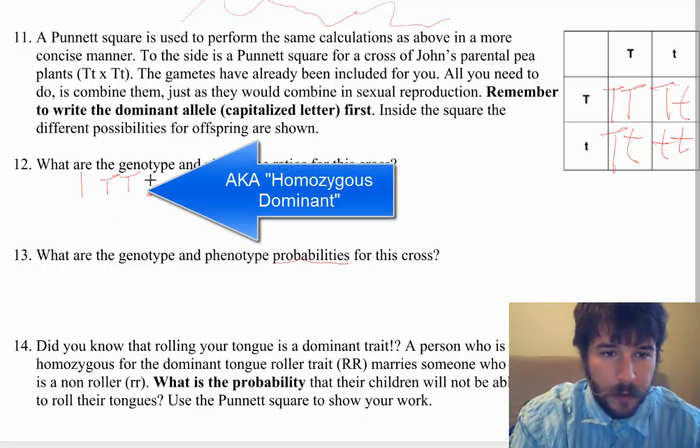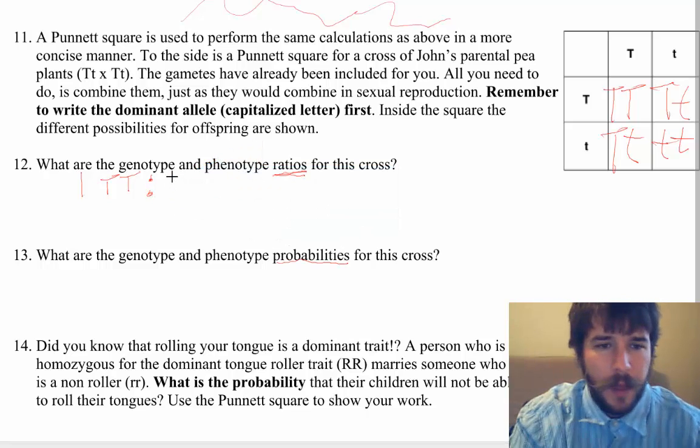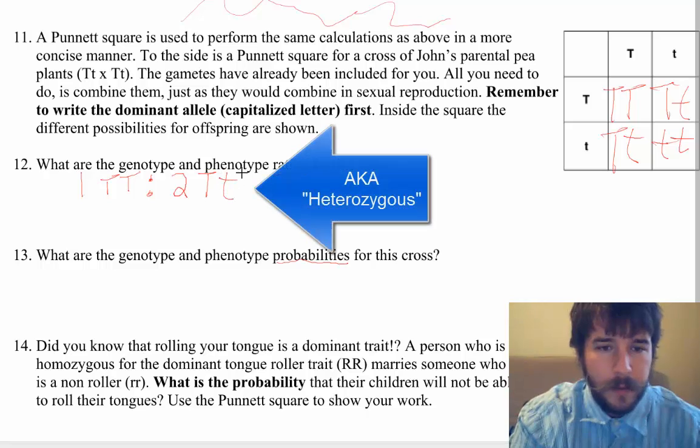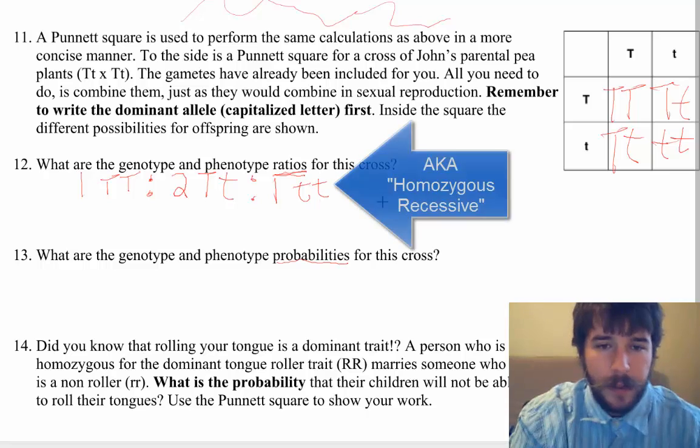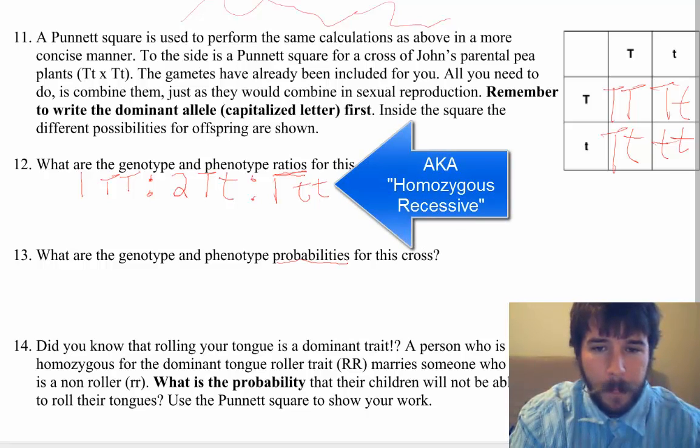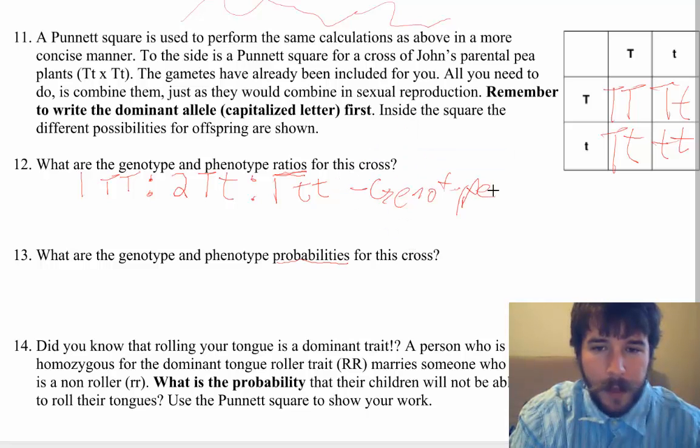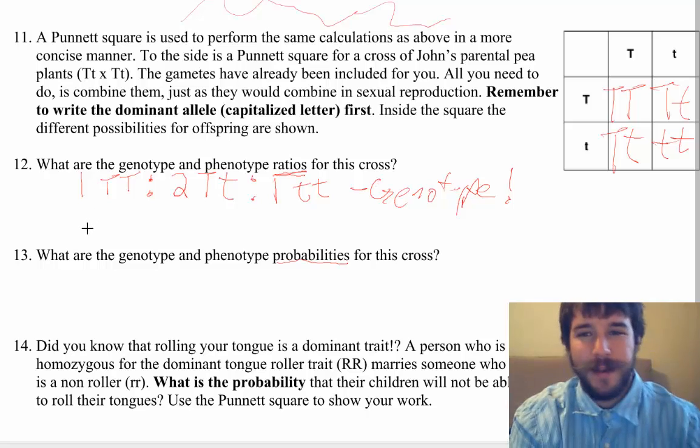I have two of them that are big T, little t. And then I have one of them as little t, little t. That right there, that is my genotype ratio. And you guys remember how bad my handwriting is. Well, it's even worse on this thing.